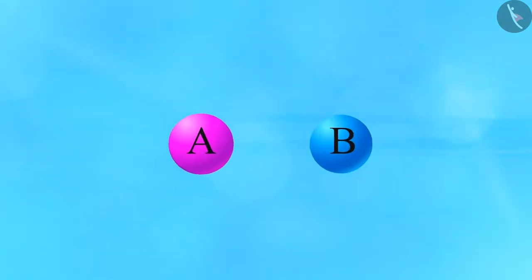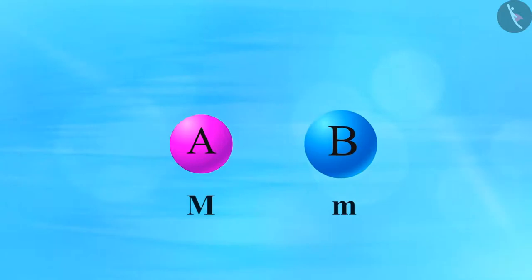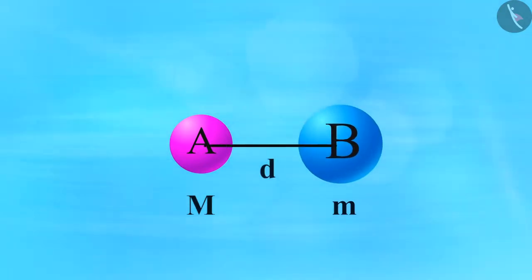Let us consider two objects A and B with masses M and m respectively and the distance between them is d. Let the force of attraction between A and B be F. According to the universal law of gravitation, the force between the objects is directly proportional to the product of their masses.